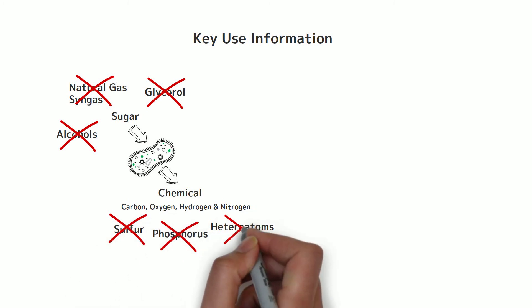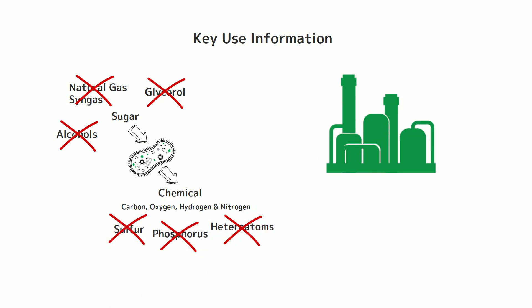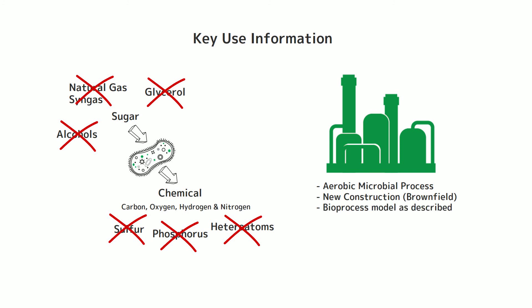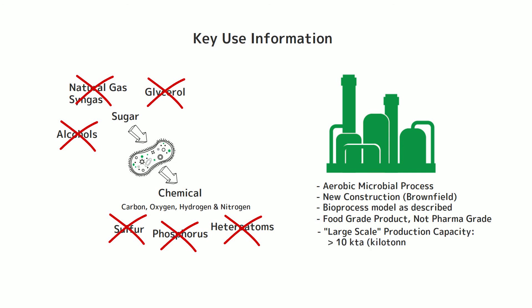Additionally, the calculator is currently limited to bioprocesses as described by the model — aerobic microbial fermentations and newly constructed brownfield facilities — with additional constraints of the bioprocess as described, for example, the use of centrifugation for cell separations. The plant, as modeled, is appropriate for food grade products but not pharma-grade chemicals, which require more expensive equipment and quality control. And as the calculator assumes the construction of a new facility, it should be used for larger production volumes in excess of 10 kilotons per year.